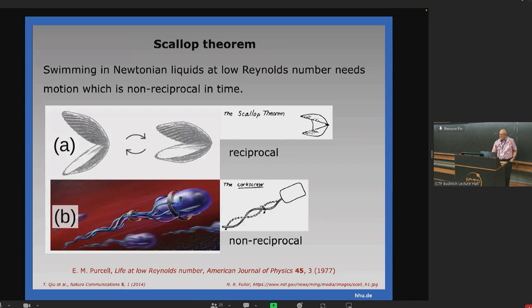Here is a famous theorem, so-called scallop theorem. This is a model of a scallop. It works in water for a macroscopic scallop. But if you go to a very viscous liquid or to very small sizes at low Reynolds number, it doesn't work any longer.